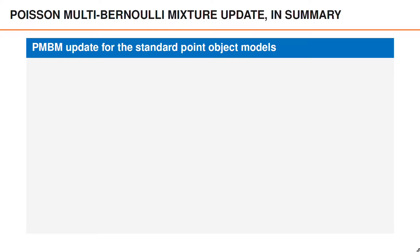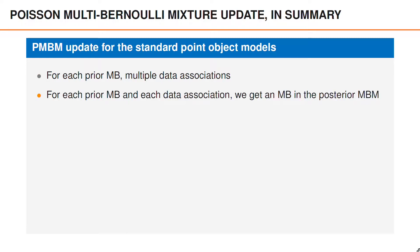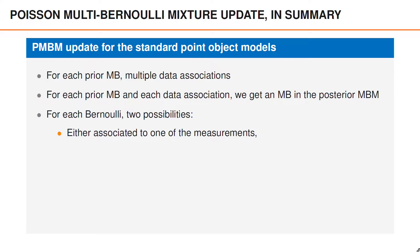The PMBM update has similarities to the multi-Bernoulli mixture update in the MBM filter, but there are some key differences. Just like in the MBM filter update, in the PMBM update, for each prior multi-Bernoulli we have multiple data associations, and each combination of prior multi-Bernoulli and data association gives us a multi-Bernoulli in the posterior MBM part of the PMBM density. Given a prior multi-Bernoulli and a data association, for each Bernoulli in the prior we have two possibilities: either it is associated to one of the measurements, or it is misdetected. This is similar to the update in the multi-Bernoulli mixture filter.